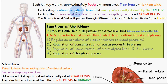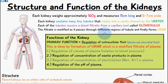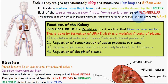Each kidney contains many tiny tubules that empty into the cavity drained by the ureter. Each tubule receives a blood filtrate from a capillary bed called a glomerulus. Blood arrives via the afferent arteriole, drains into the glomerulus, and forms a filtrate. This filtrate passes through the tubules where modifications occur, before draining into the renal pelvis.